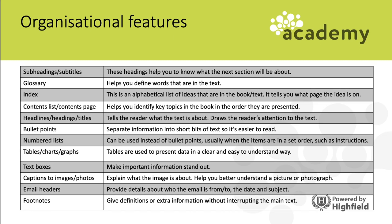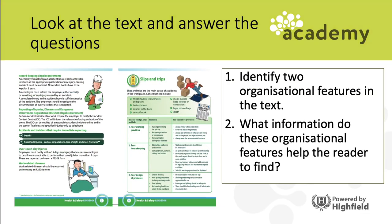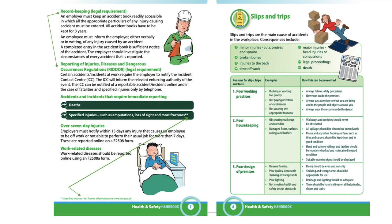Let's have some practice. I want you to try two tasks: first, identify two organizational features in the text shown; second, explain what information these organizational features help the reader to find - in other words, why has the writer used them? Looking at the text, we can find several organizational features, including subheadings identifying the different parts of the text.